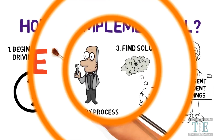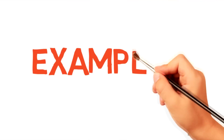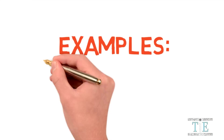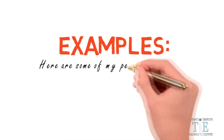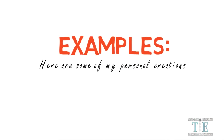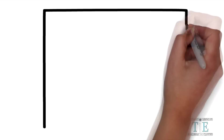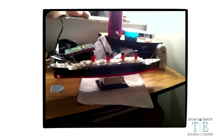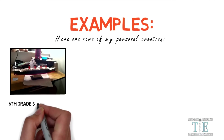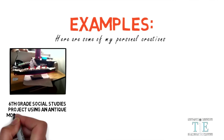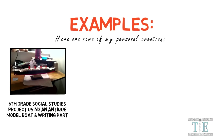Now that we have done all this talking about PBL, let's take a look at some classroom examples. Here are a few of my personal creations that I am very proud of. This is a project where I ask students to build a model of the Titanic and examine the ways the ship could have been built much better. It is a sixth grade social studies project and includes reasoning, writing, and research.